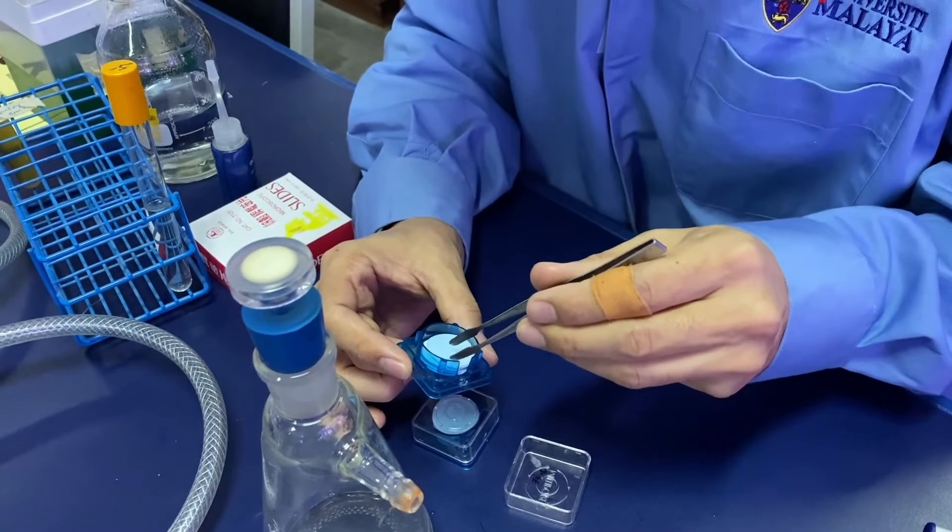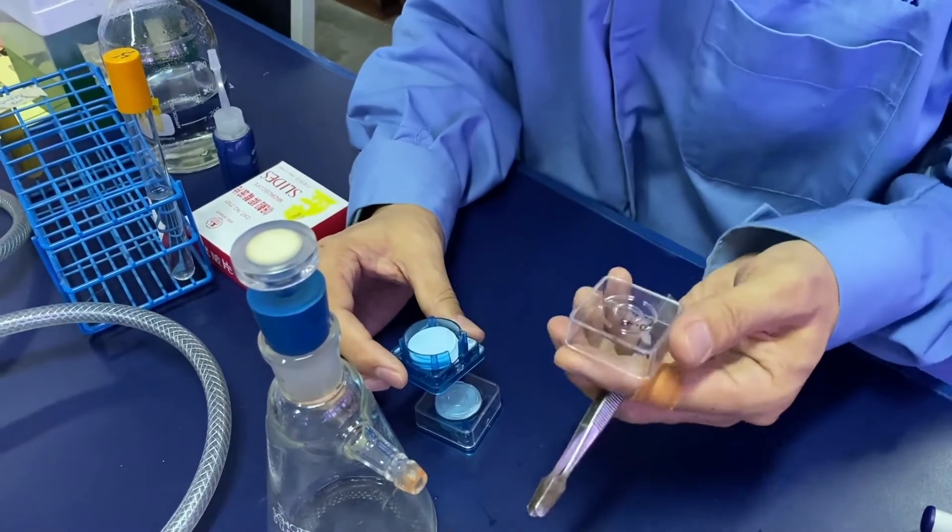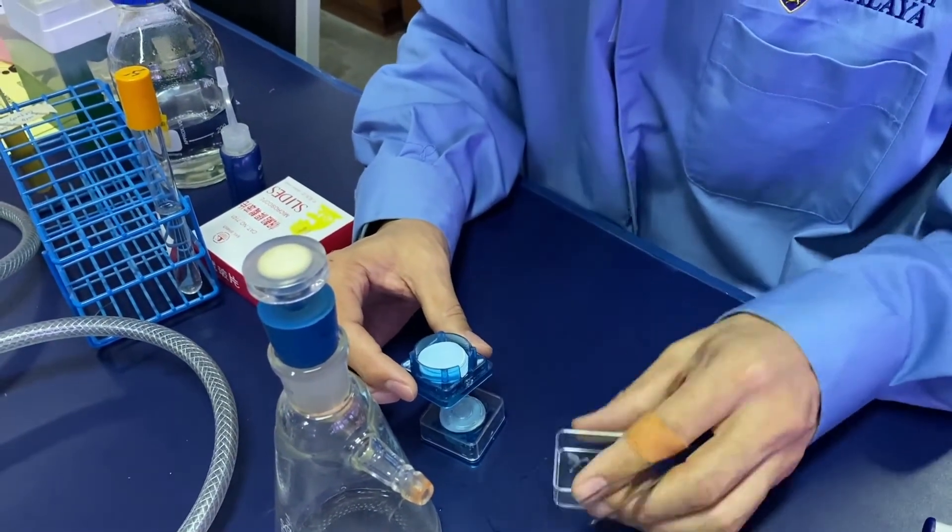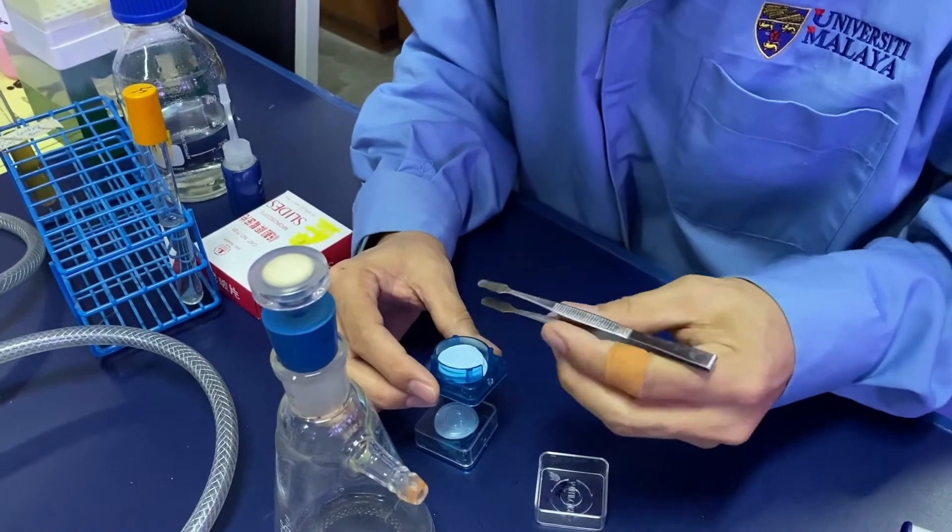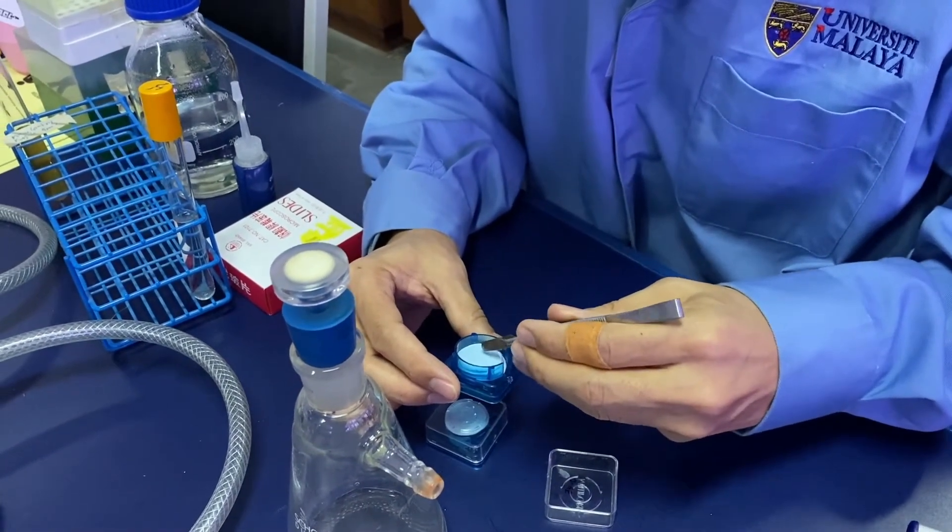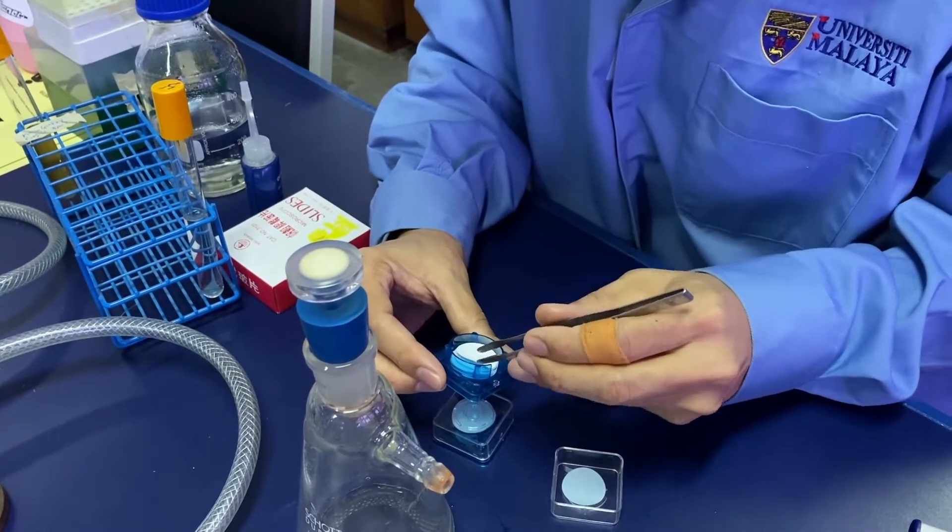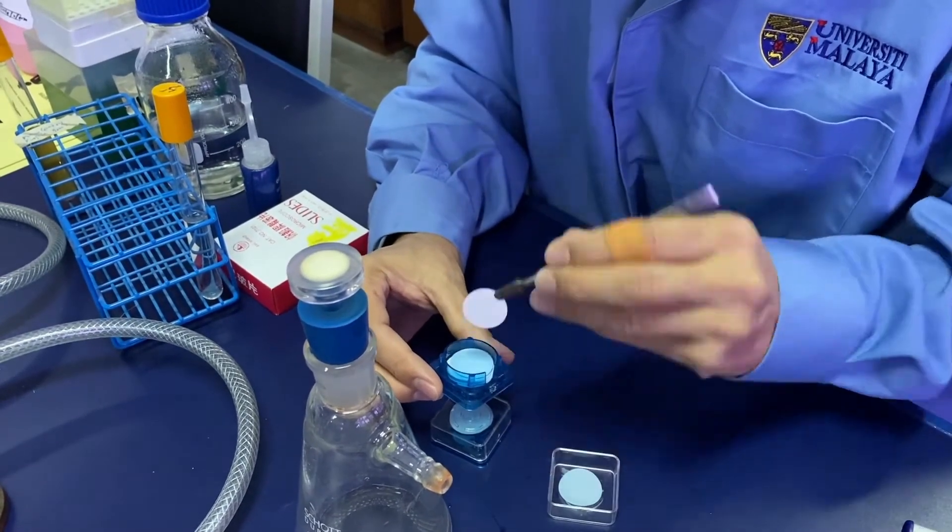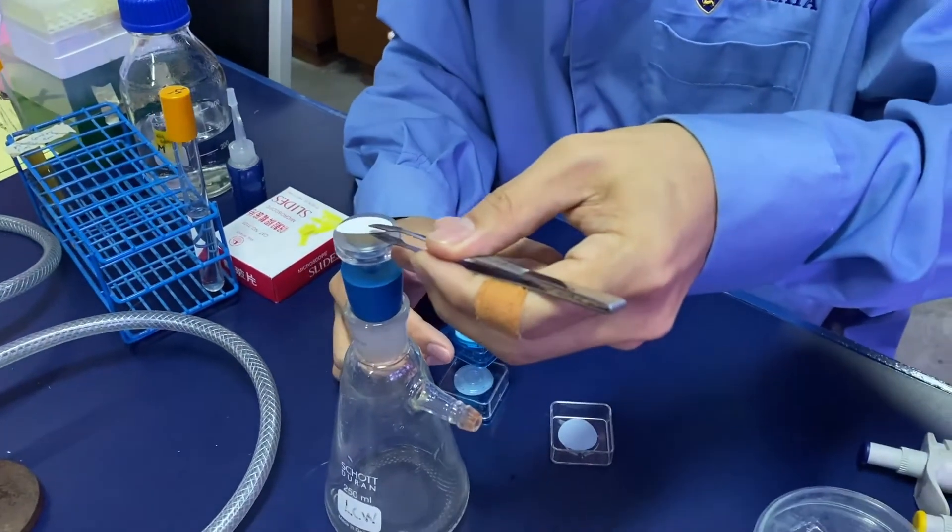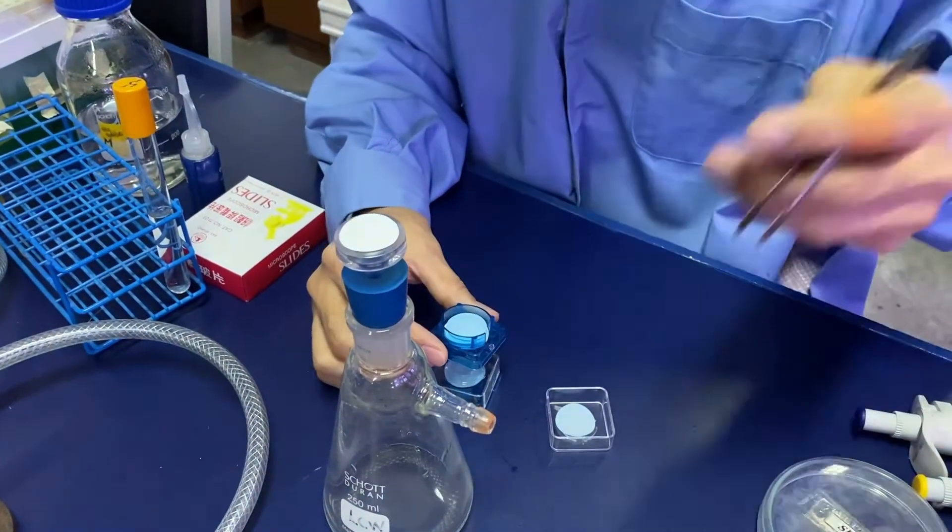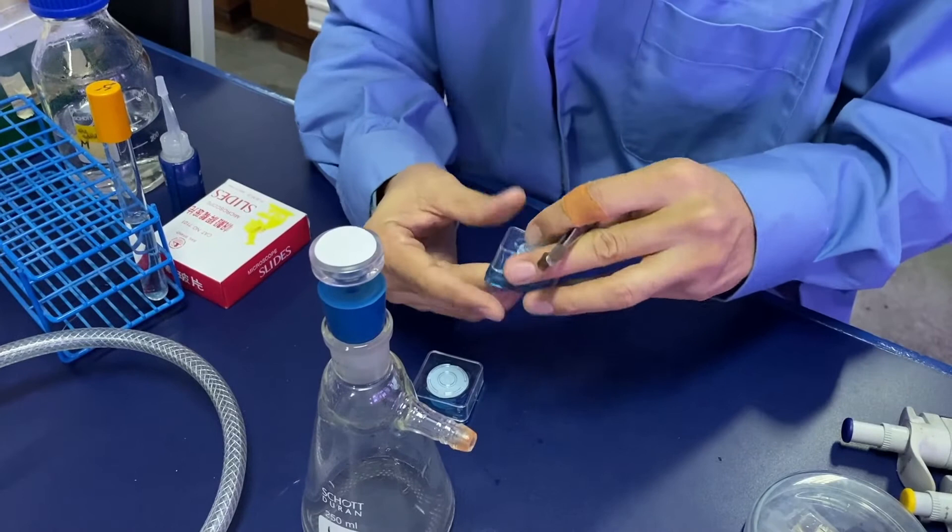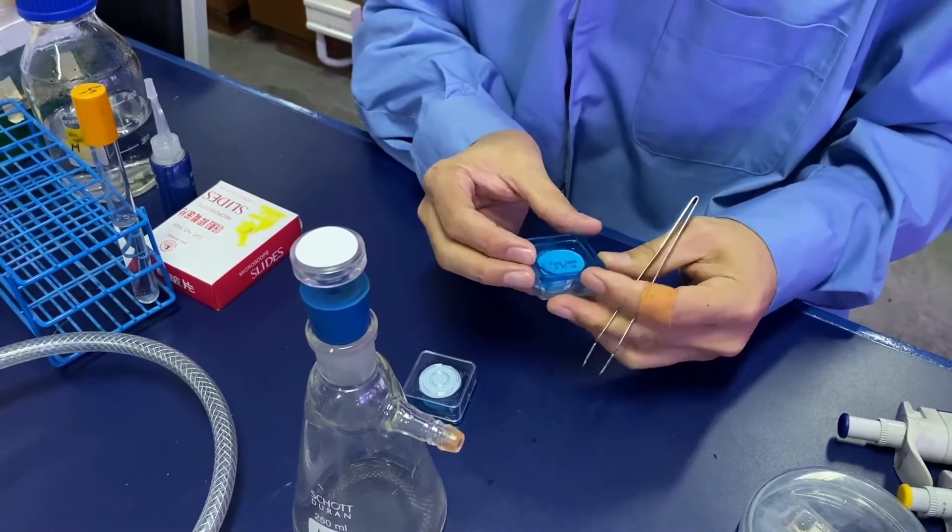On top of the base, the backing filter is a 0.45 micron nitrocellulose membrane. Place it gently on top of the base of the filtration set.